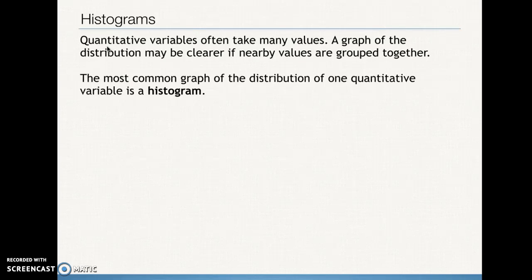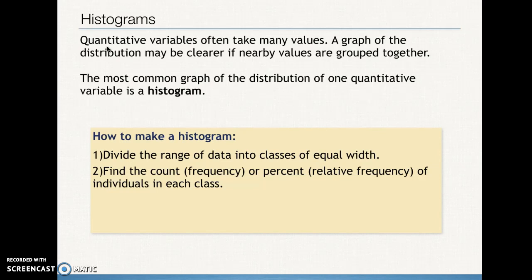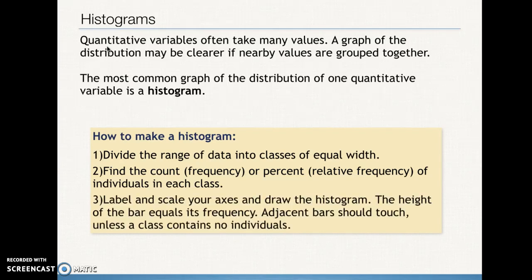On a histogram, we're going to be, just as on the other graphs for quantitative data and for categorical data for that matter, always writing down the frequency or graphing the frequency with which each value occurs within the set of data. And in order to make a histogram, we first decide if we're going to group the data. And if we are, we need to make sure that we create classes or bins or groups of equal width. Then we're going to find the frequency or the relative frequency of each of those different values that our quantitative variable can take on. Always remember we need to label and scale our axes, and then we draw in the frequency for each one of those possible values. Adjacent bars should touch unless we have a particular group or a particular value that has no individuals. And then we see a gap in the data.